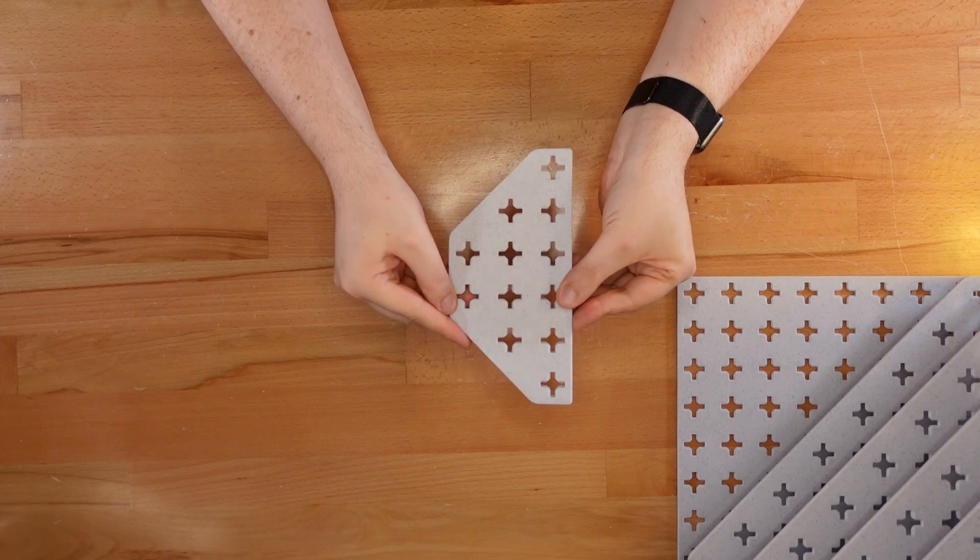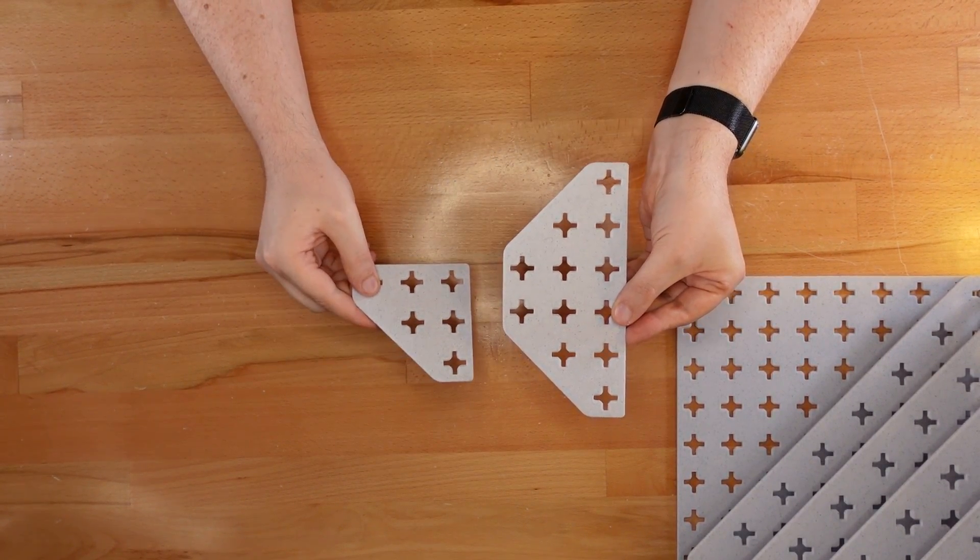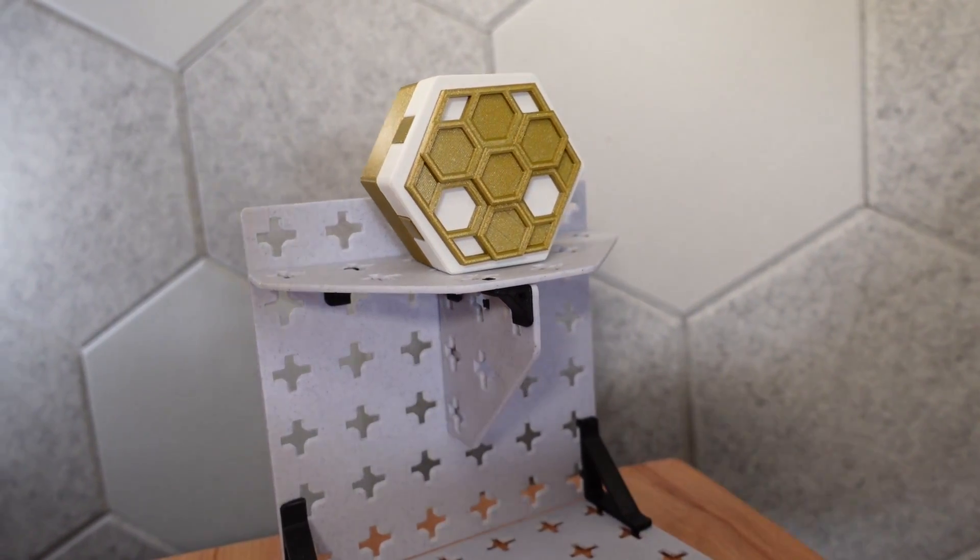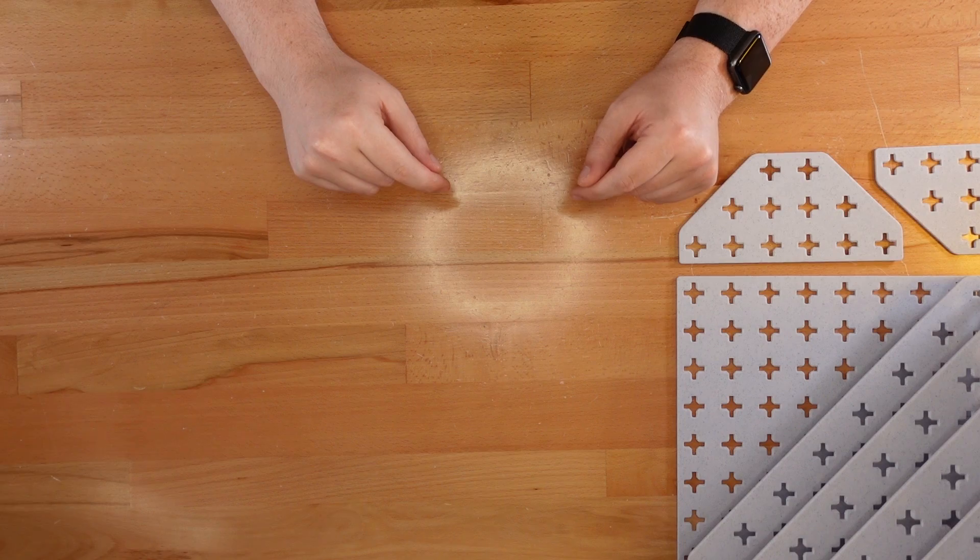I also created some double panels. They're basically two angled panels with a shared side. These are a really good option if you're making floating shelves. The next update was a very popular request.